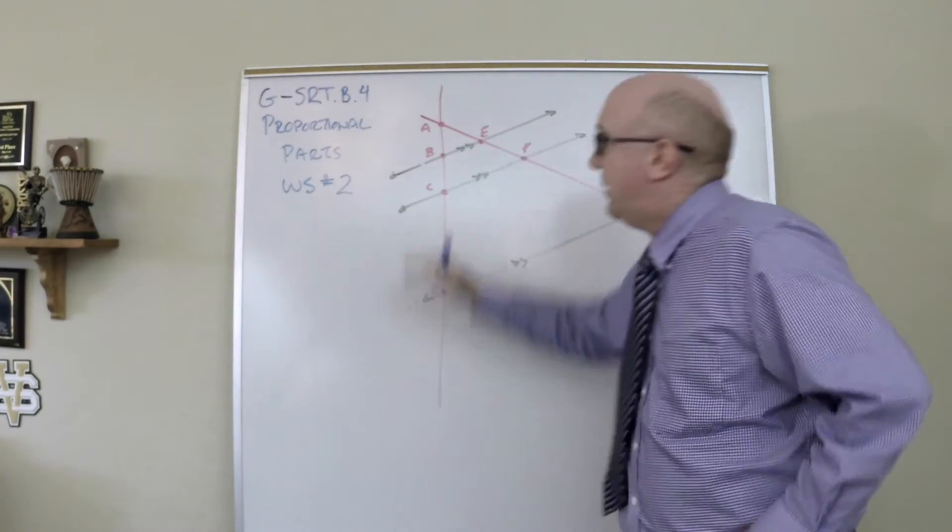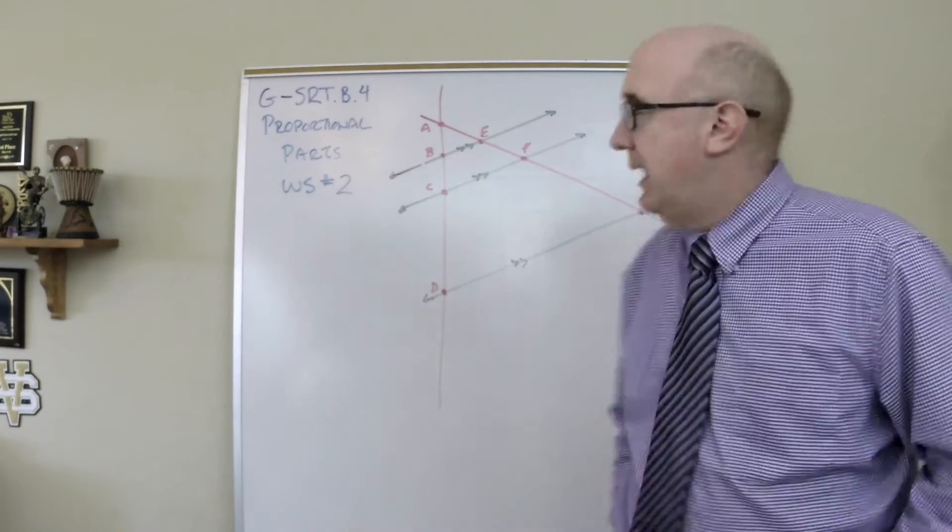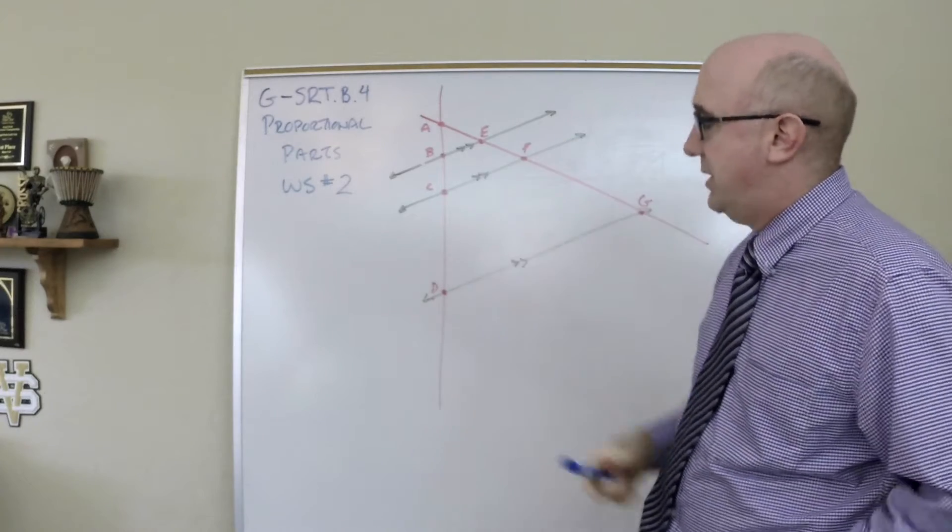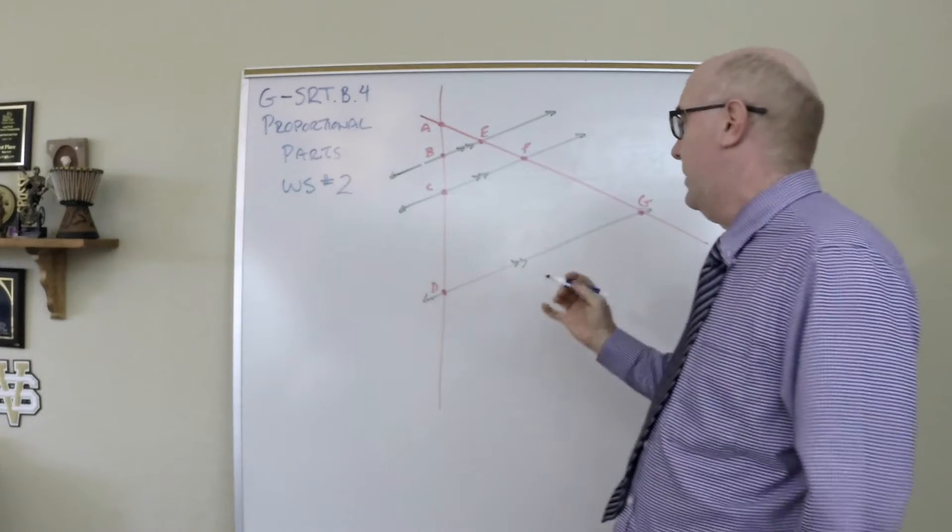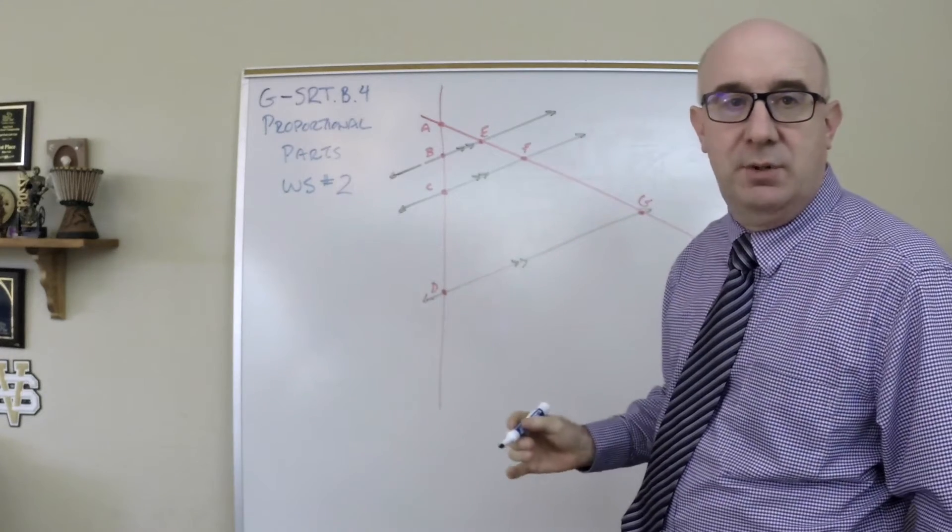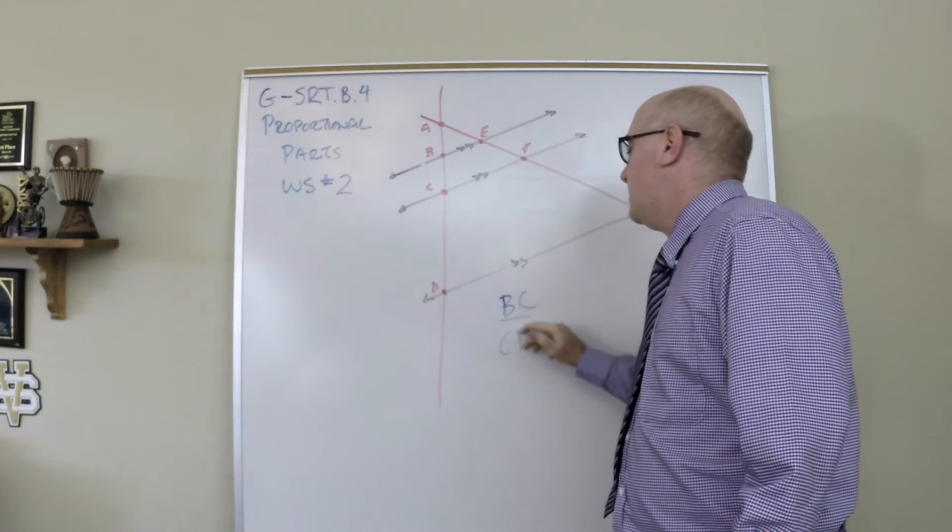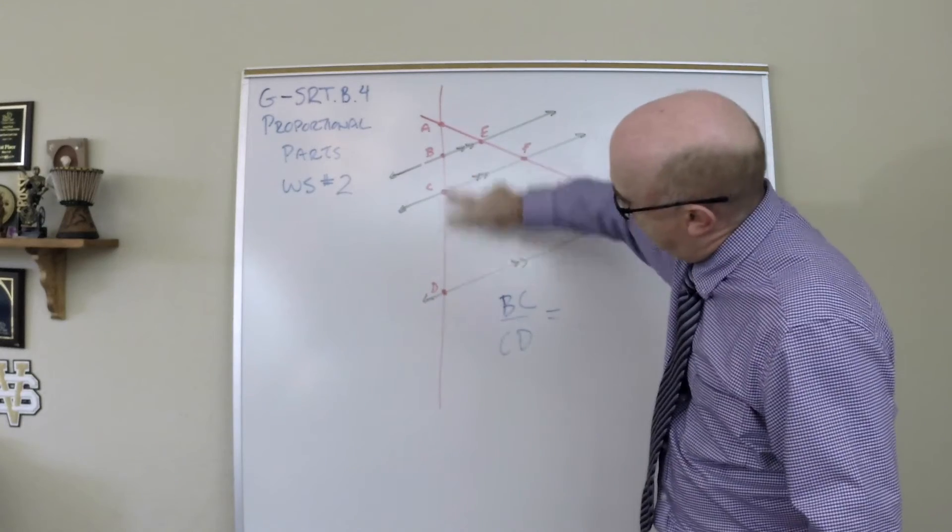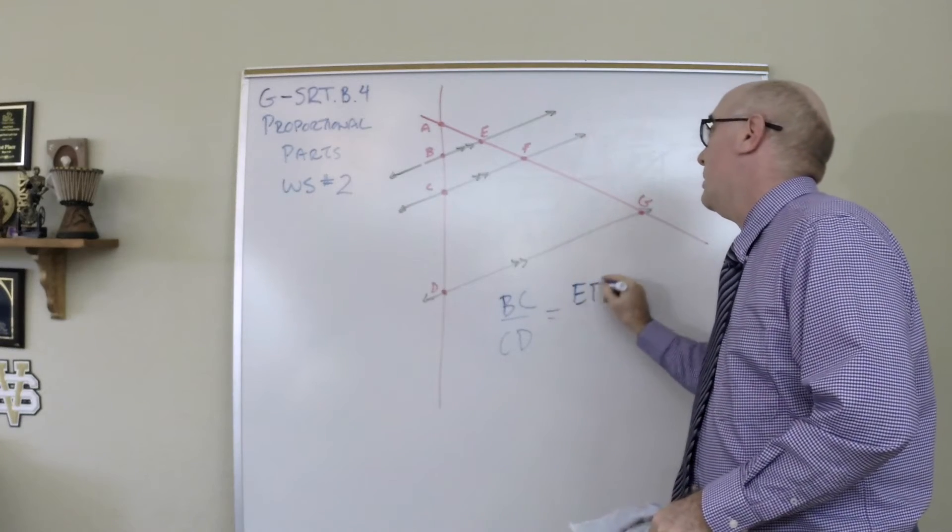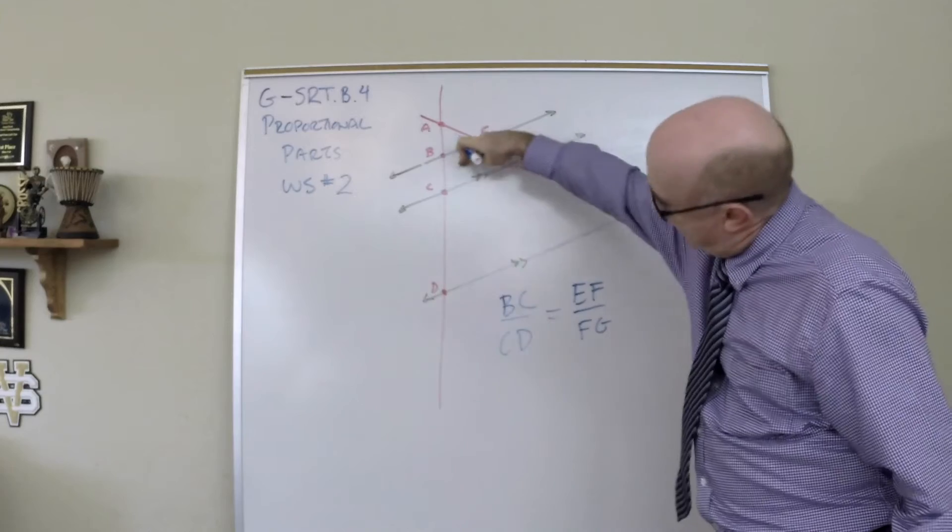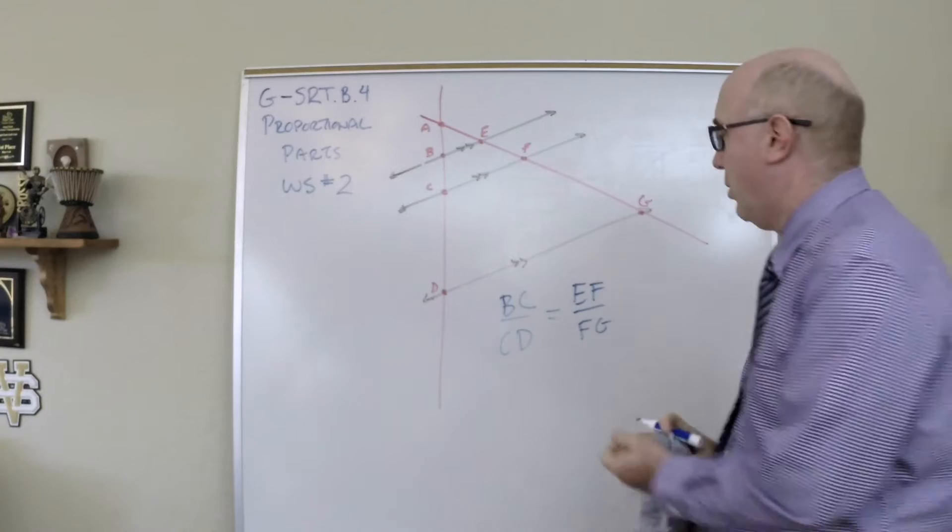Now what we learn in the side splitting theorem is that because these lines are parallel, they cut lines proportionally. There are many proportions that can be written here. Let's try BC is to CD as... of course our answer is EF would be to FG. This is to this as this is to this. Those pieces, while they're not equal, are cut proportionally.